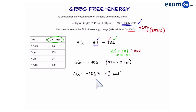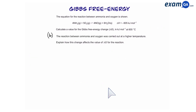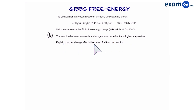Because it's a negative value, that means at 600 degrees Celsius this reaction is feasible. Now part B: the same reaction was carried out at a higher temperature. Explain how this would affect the value for delta G.